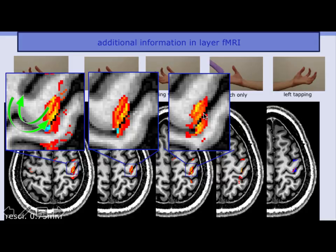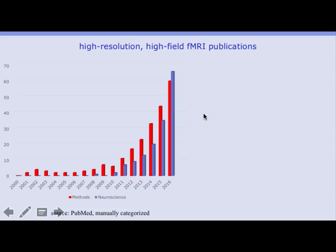This input-output information about microcircuit involvement is a major motivator for more high-resolution, high-field studies being published every year. The field was flat for the first ten years until about 2010 due to the challenges, but once people got a handle on them it really took off. It's not only methods papers but also neuroscience applications papers increasing — in recent years, neuroscience papers have overtaken methods papers. The high popularity is also reflected in three special issues in the last year and a half: one on high fields, one on high resolution, and one specifically on laminar and columnar fMRI.